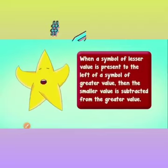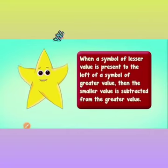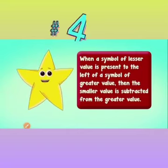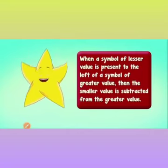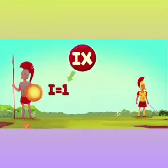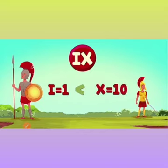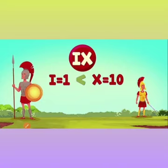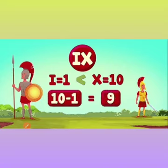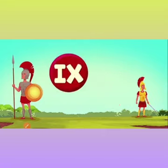Rule 4: when a symbol of lesser value is present to the left of a symbol of greater value, the smaller value is subtracted from the greater value. For example, IX — here I equals 1, which is smaller than X equals 10, and I is to the left of X. So I is subtracted from X: 10 minus 1 equals 9.